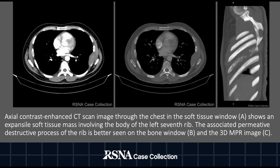On axial image through the chest in soft tissue window, there is an expansile soft tissue mass involving the body of the left 7th rib, and on axial and sagittal MPR bone window images there is an associated permeative and lytic process.